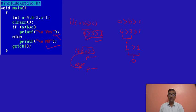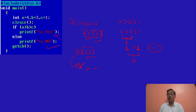Remember, it won't evaluate like this: 4 > 3 yes, 3 > 1 yes, condition satisfied, go to yes. No. Here, first it evaluates 4 > 3 — yes, condition satisfied, returns 1. And this 1 is compared with 1: is 1 > 1? No, it is equal to 1, not greater than. So this returns 0. And the 0 gets compared. Remember, this is a very tricky question.